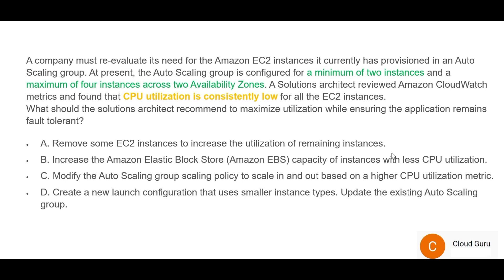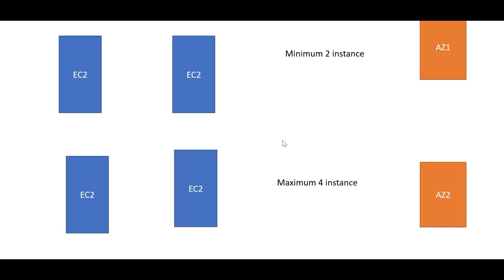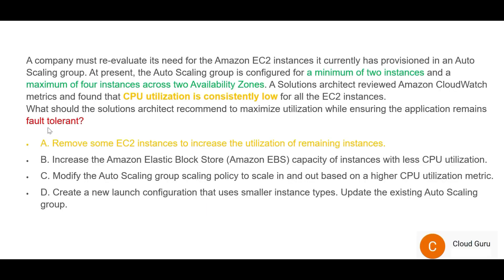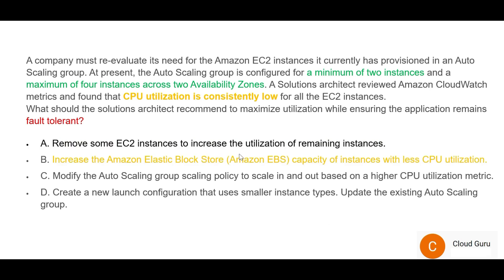Option A says: remove some EC2 instances to increase the utilization of remaining instances. This will not work — if we are operating at the minimum of two instances and remove one, it will not be fault tolerant. The question already says fault tolerance is required, so A is wrong. Option B says: increase the block store capacity for instances with less CPU utilization.